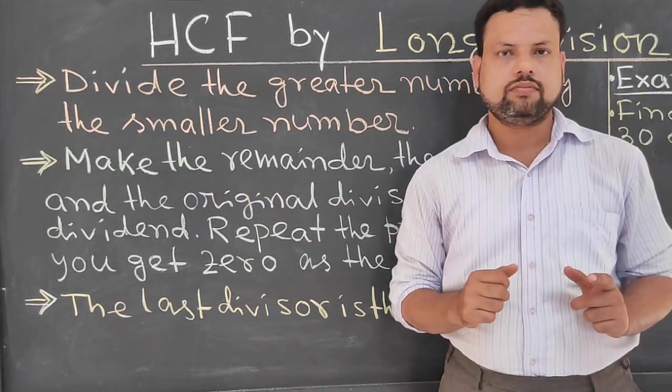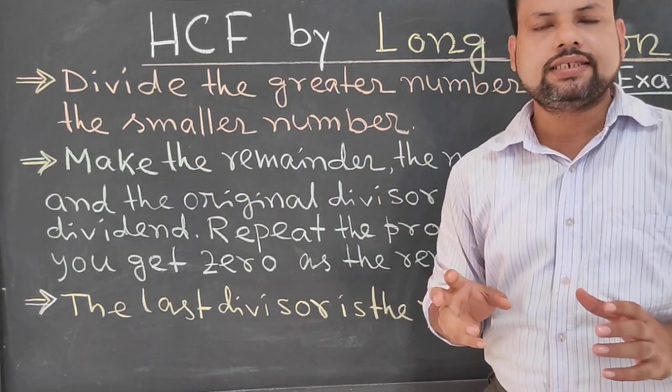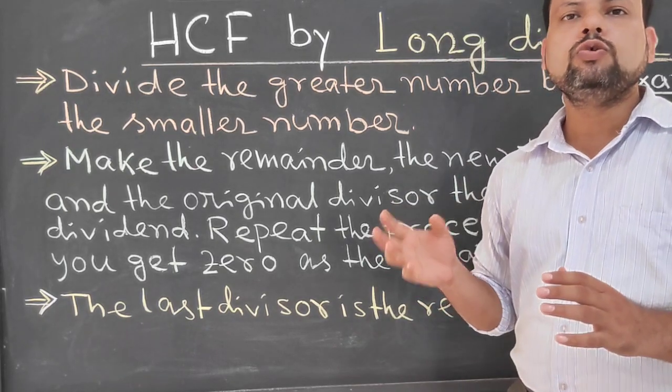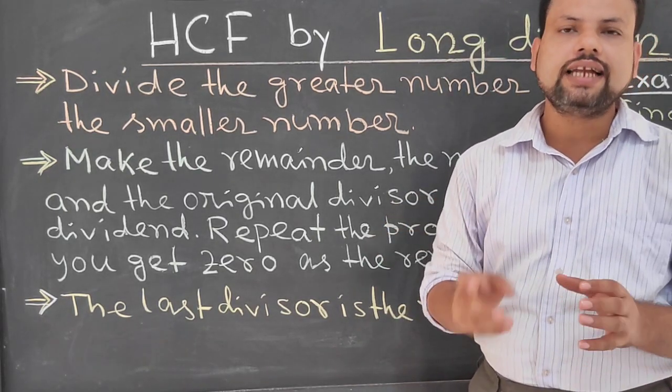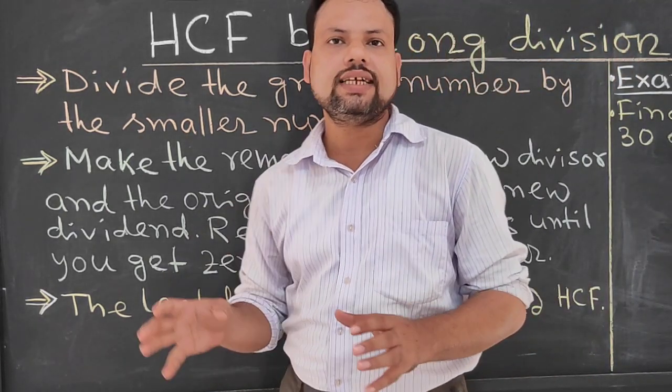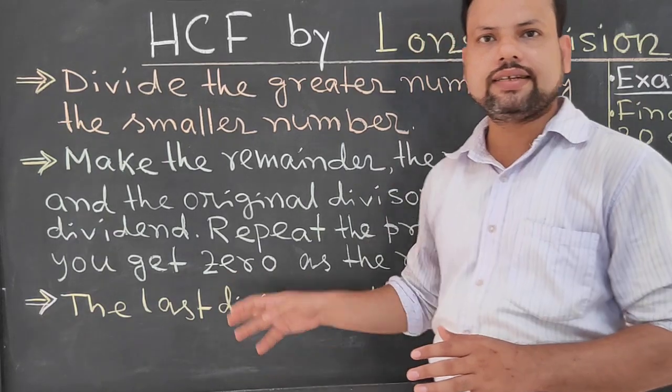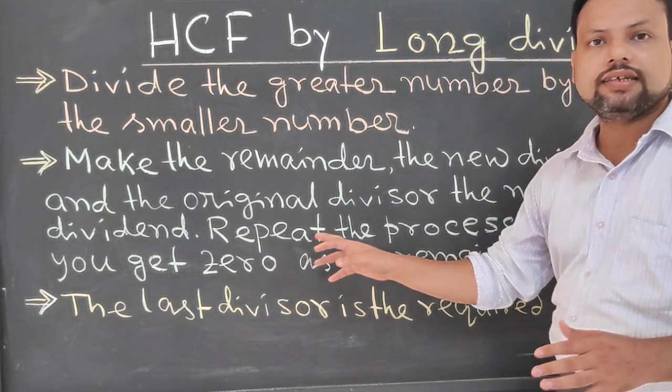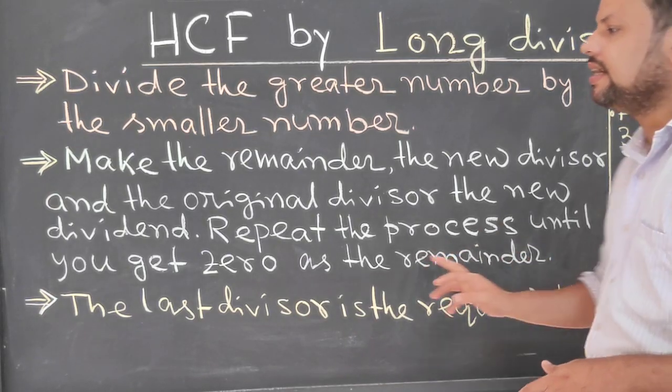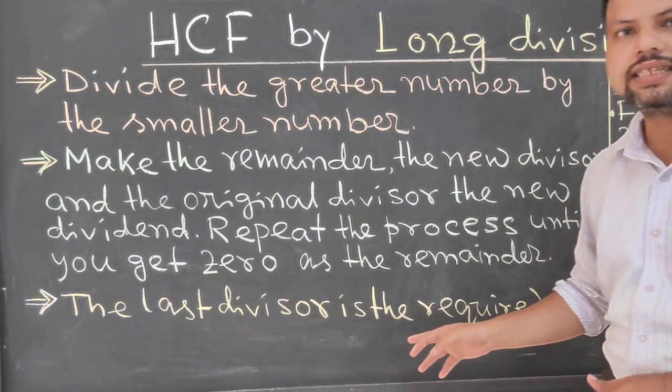Now, second step. After dividing this, I will get some remainder. Again, we have to use this remainder as a divisor and previous or original divisor used as dividend. And we have to continue till 0. Repeat the process until you get 0 as the remainder.